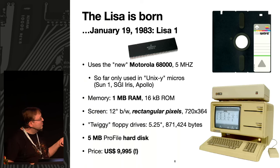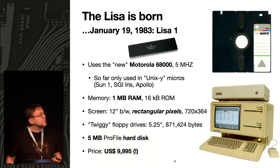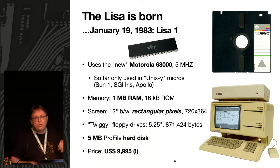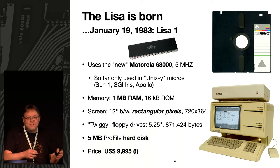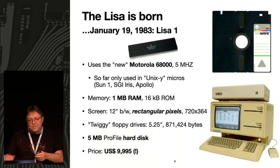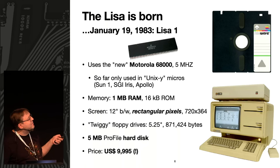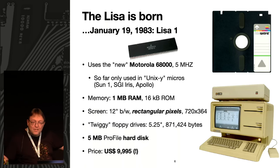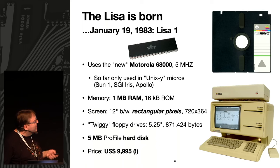The first Sun machine (Sun-1), the first SGI machine (the IRIS), and the first Apollo workstations were all based on the same Motorola 68k processor, intended to run 10 or 20 users simultaneously on terminals. Apple dared to use this expensive high-end CPU for a single user doing text processing. Pretty crazy — but the hardware specs for that time were really great.